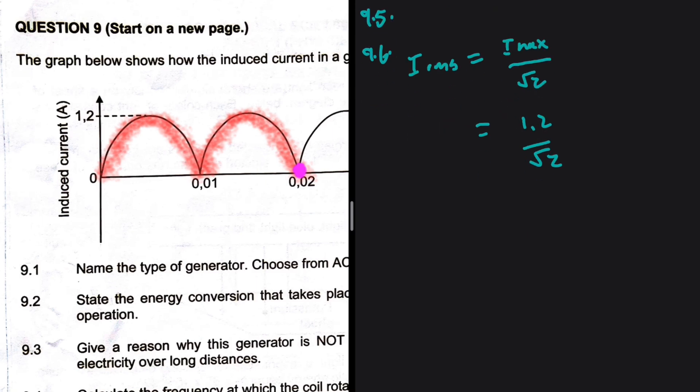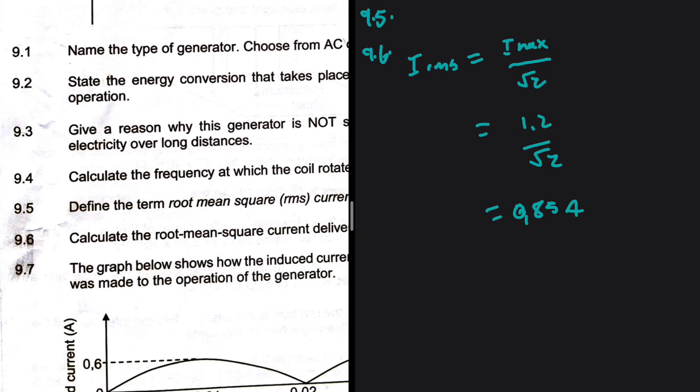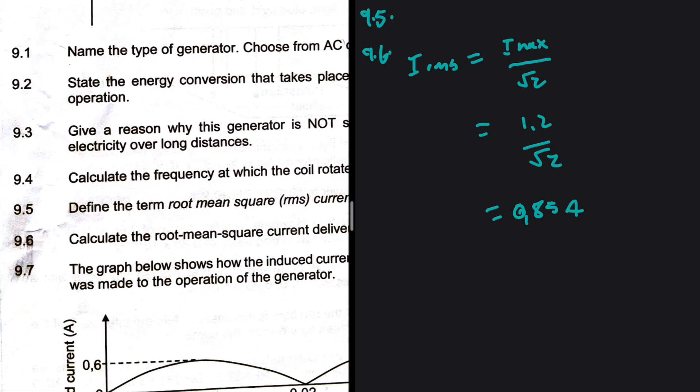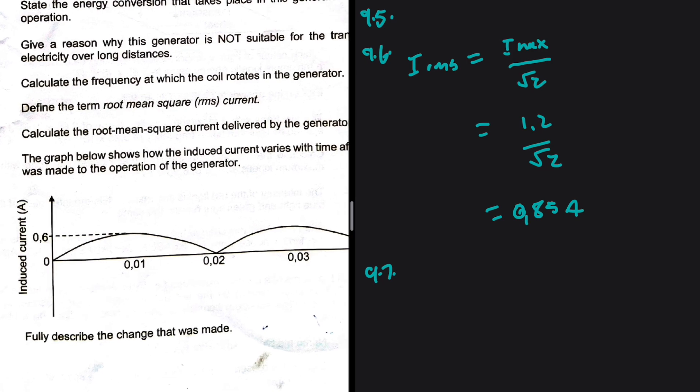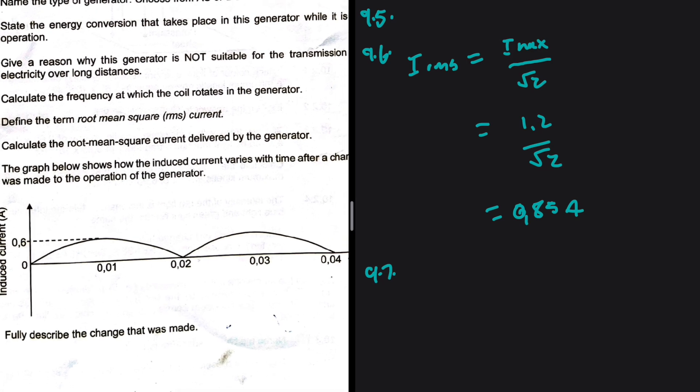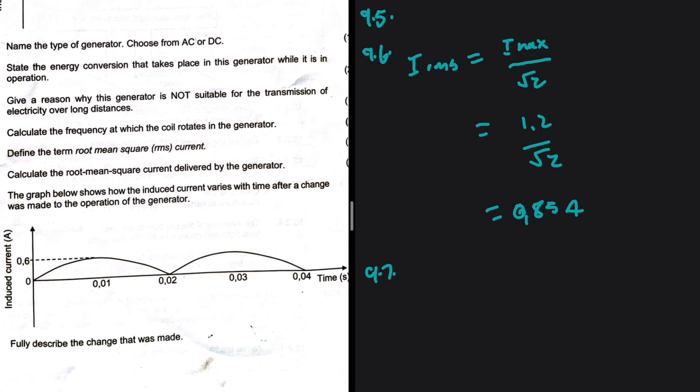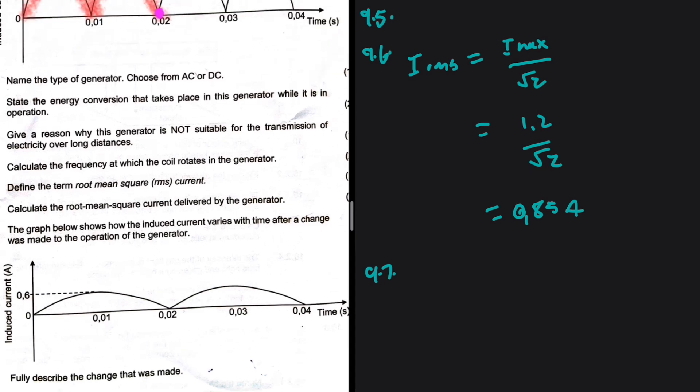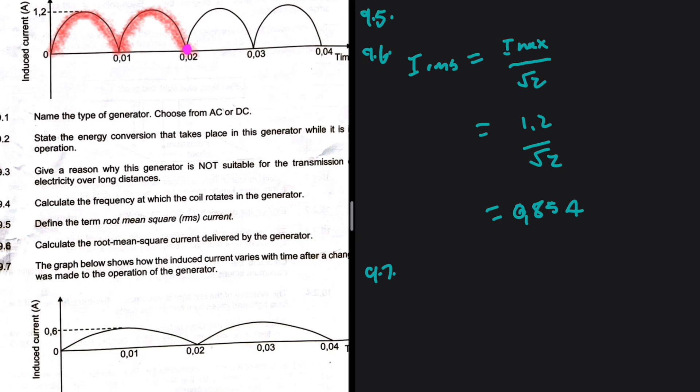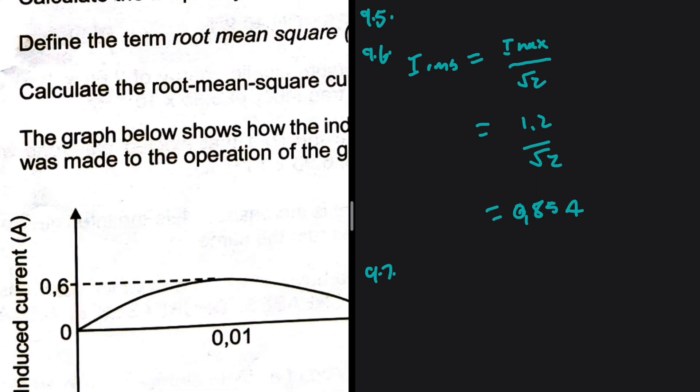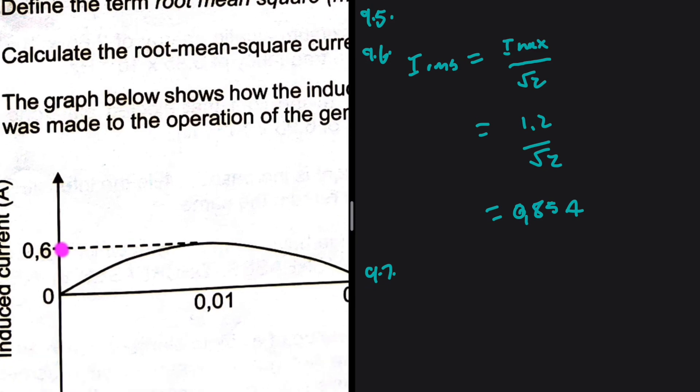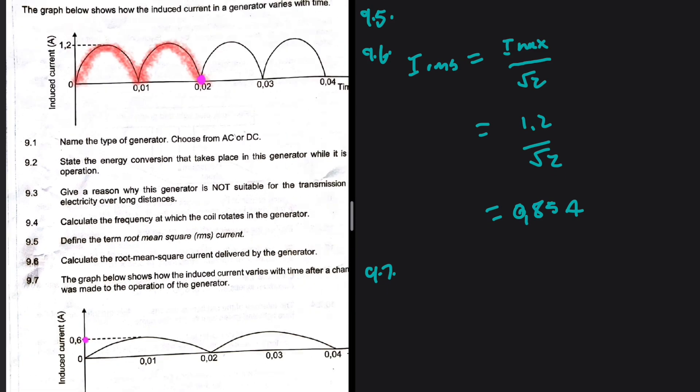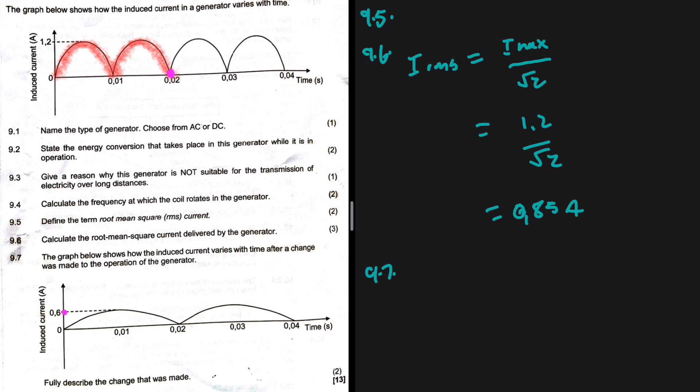What about 9.7? The graph below shows how the induced current varies with time after a change was made to the operation of the generator. Okay, so first things first.